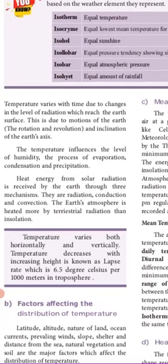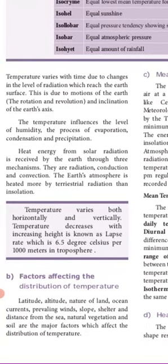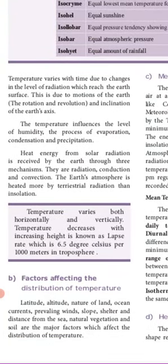The earth's atmosphere is heated more by terrestrial radiation than by insolation. Next, the factors affecting the distribution of temperature are: latitude, altitude, nature of land, ocean currents, prevailing wind, slope, shelter, distance from the sea, natural vegetation, and soil. These are the major factors which affect the distribution of temperature.